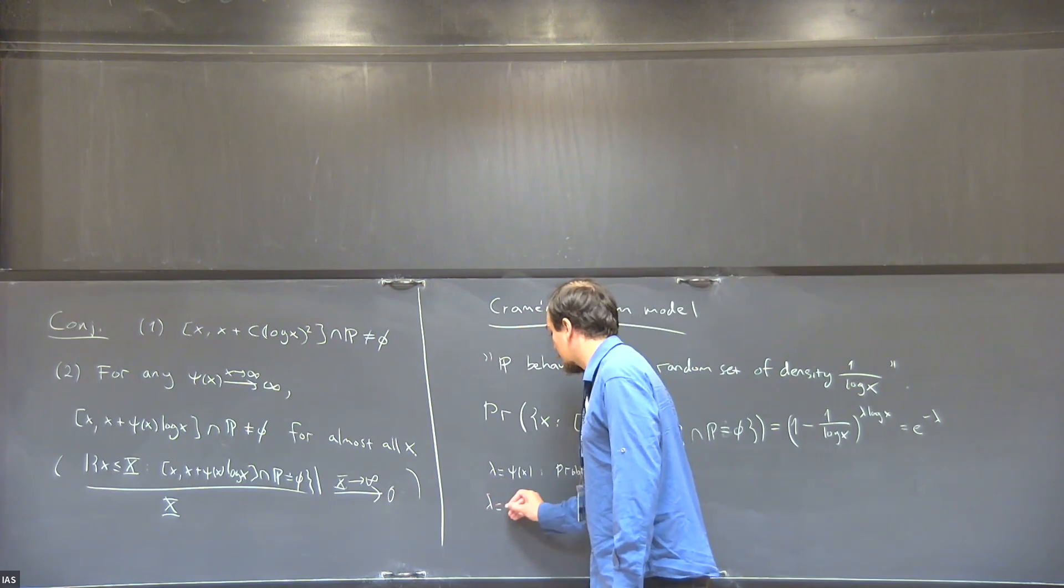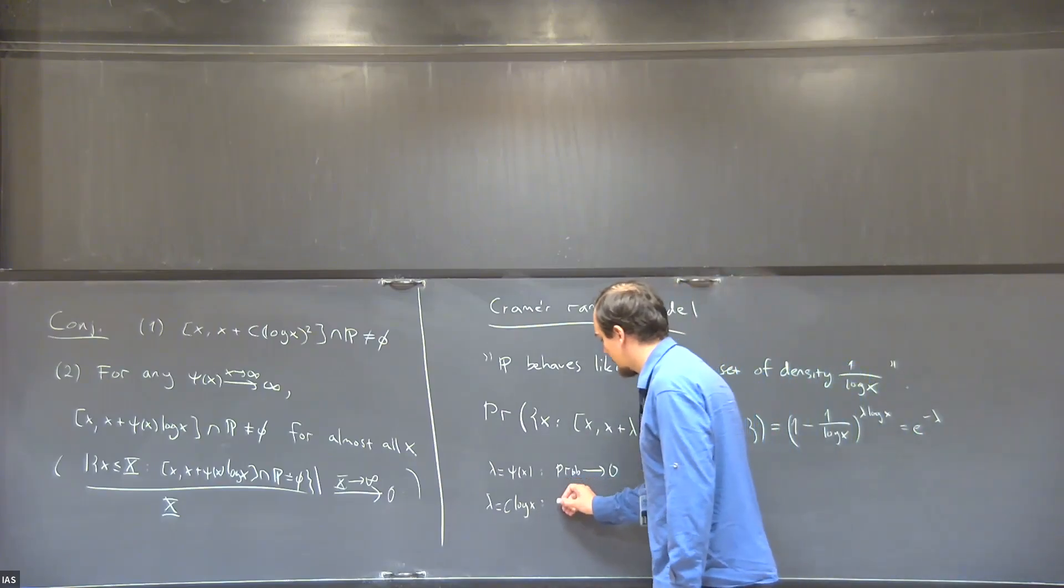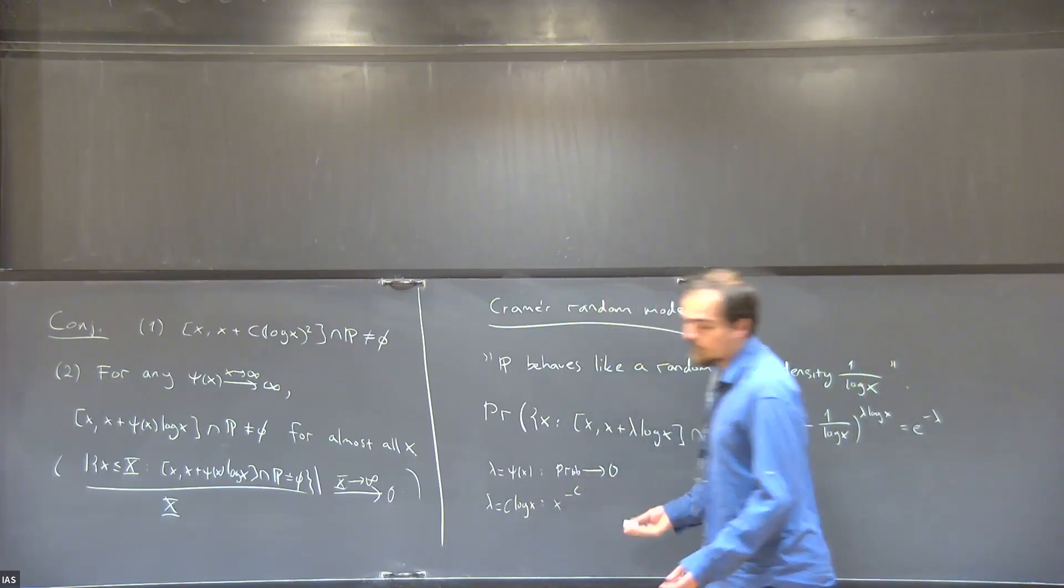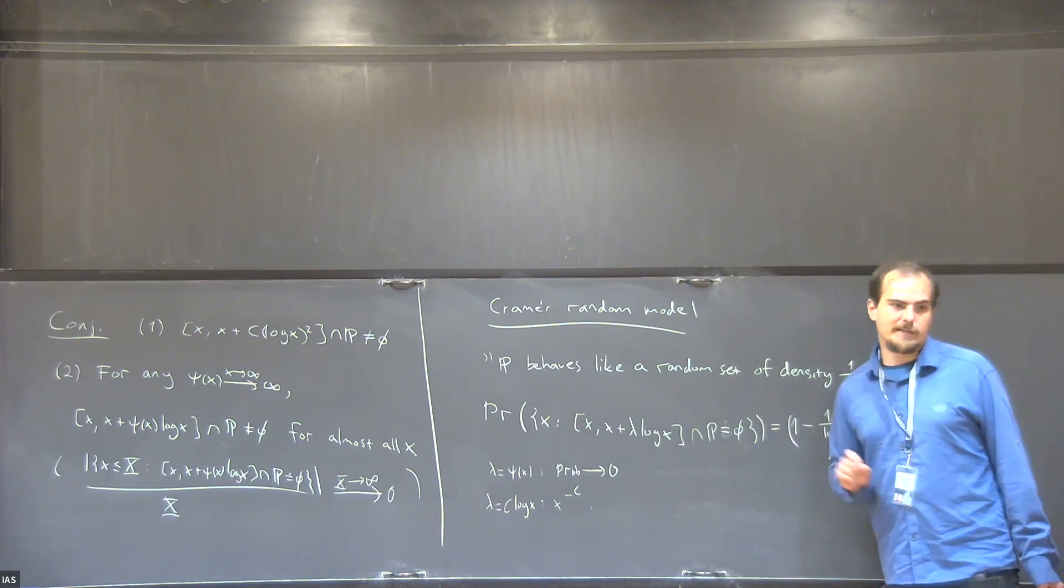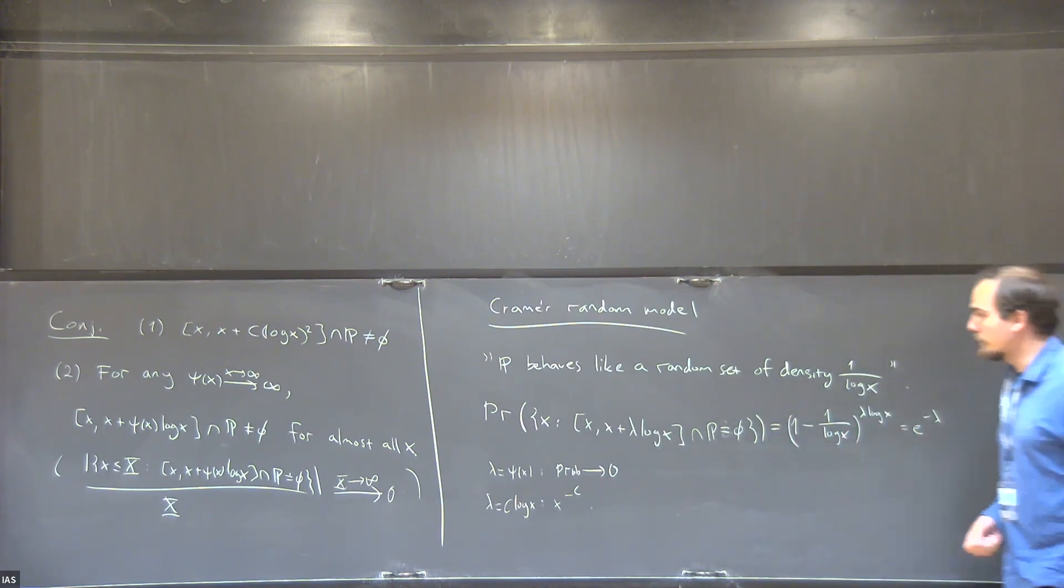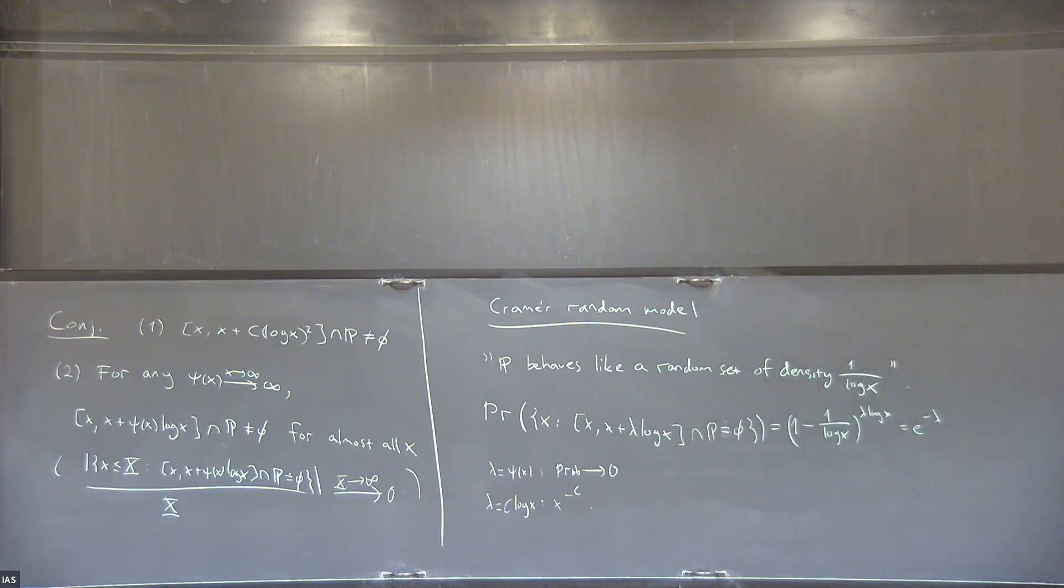If you plug in here lambda equals psi of X for any function tending to infinity, you get something that tends to zero, so probability zero that you don't have this property. And if you take lambda equals a constant times log X, you get X to the minus C. And then by Borel-Cantelli, you expect that there are no exceptional intervals because this is less than one over X. In fact, this prediction predicts that the prime gaps should be Poissonian. The random variable of how many primes you have in such intervals should be Poissonian with parameter lambda.